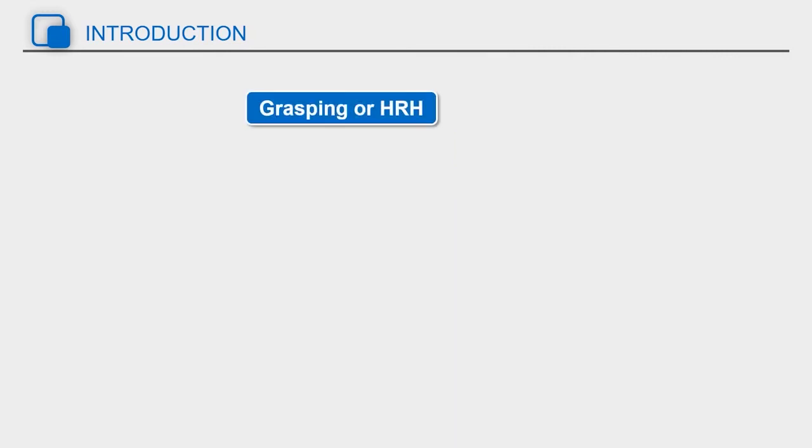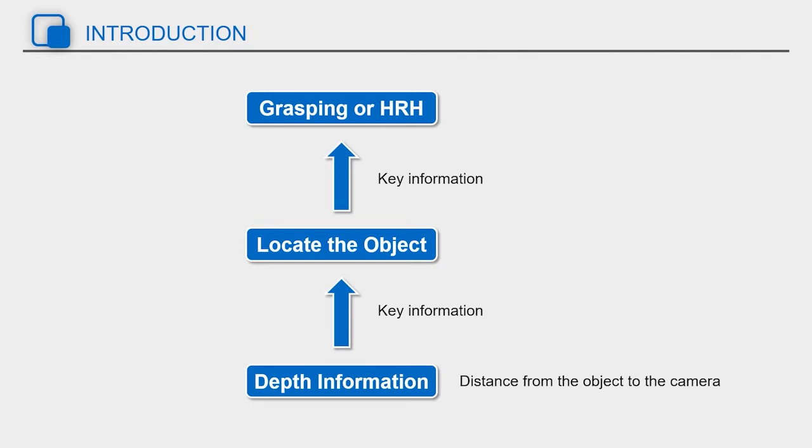To achieve grasping or human robot handover, robots must locate the three-dimensional position of the object quickly and accurately. And the distance from the object to the camera plane, namely depth information of the object, is the key information for robots to locate the object.